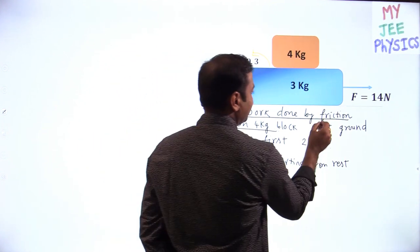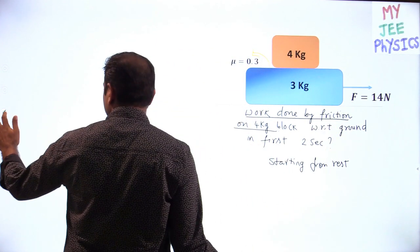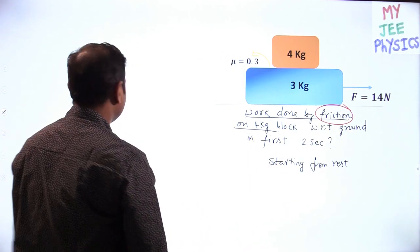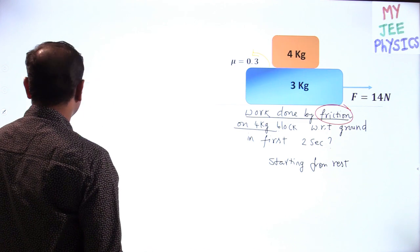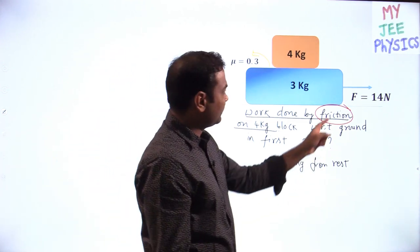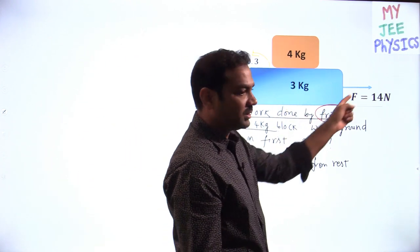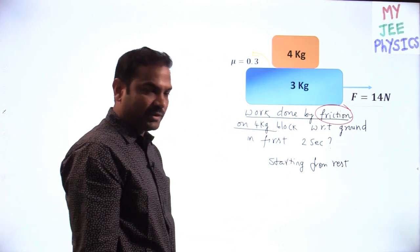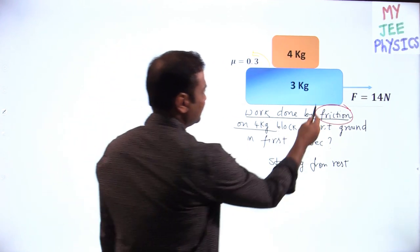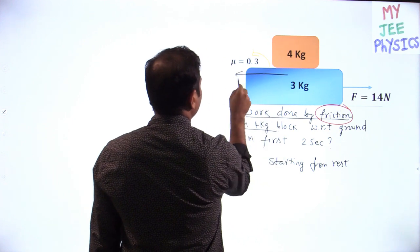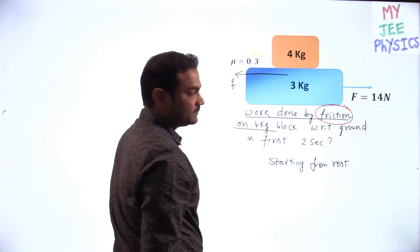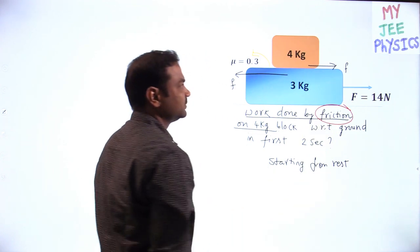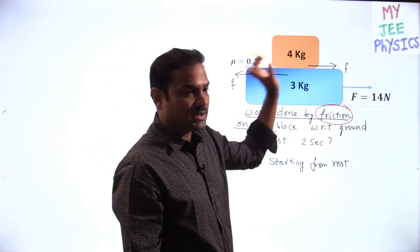Since it is work done by friction, first find the friction value. To find the friction force, first determine whether the two blocks are moving together or not. As force is acting on the 3 kg block, friction acts backward on 3 kg and forward on 4 kg. Because of friction only, the 4 kg will travel.